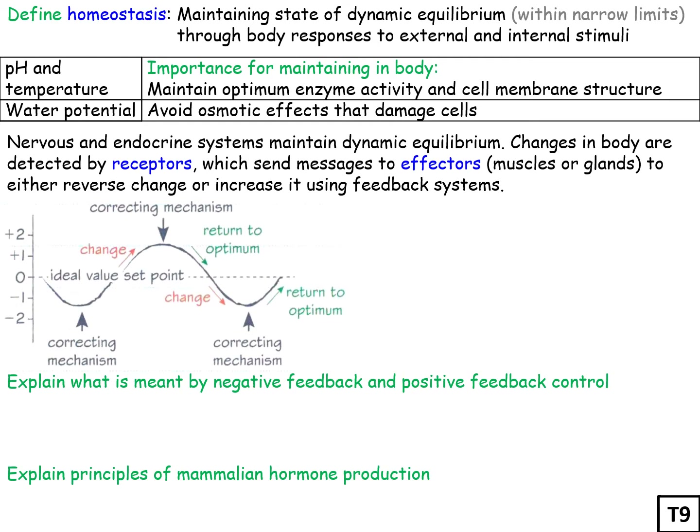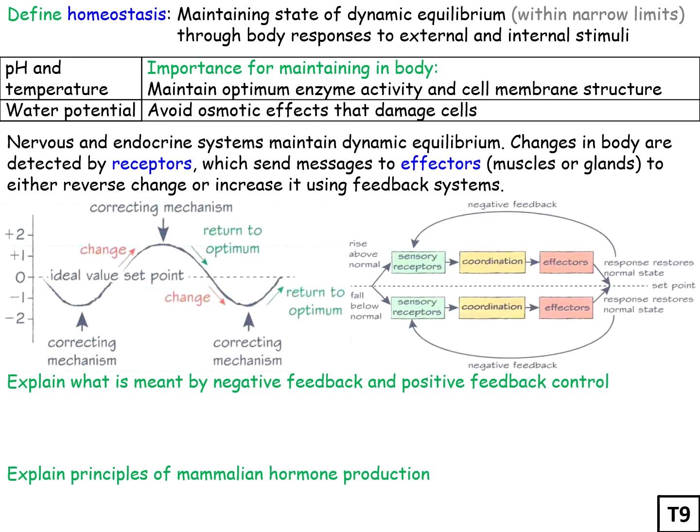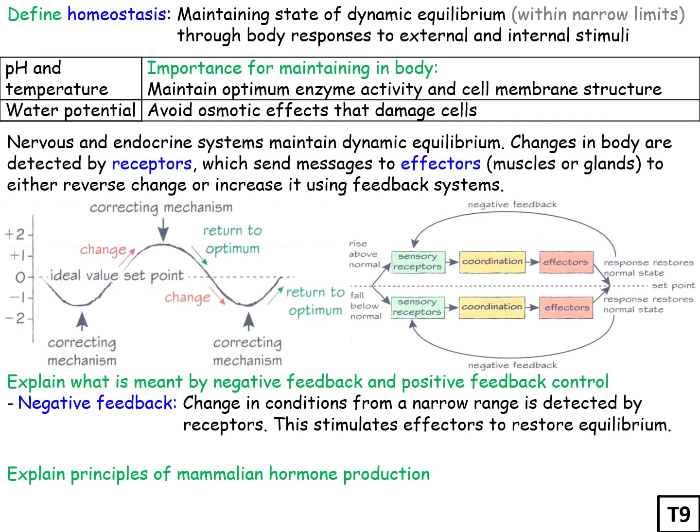There are two types of feedback systems: negative and positive. In a negative feedback system, the change in conditions from a narrow range is detected by sensor receptors, and this stimulates effectors to restore equilibrium. If something increases above the normal homeostatic level you decrease it back down, and if it decreases below you increase it back up.